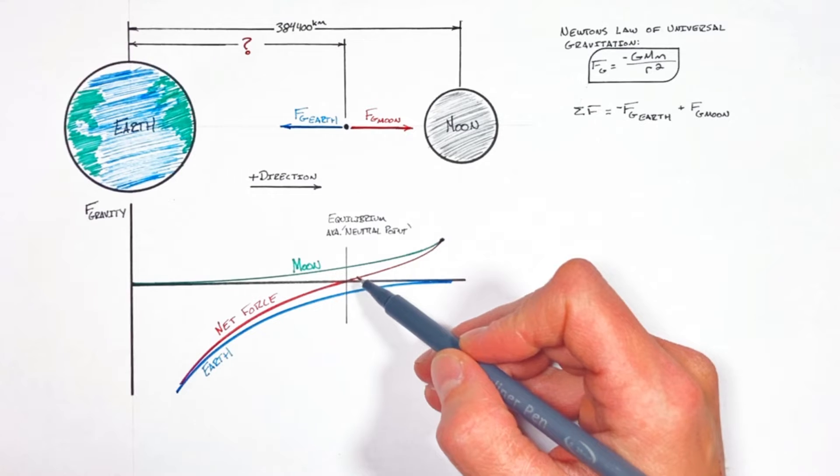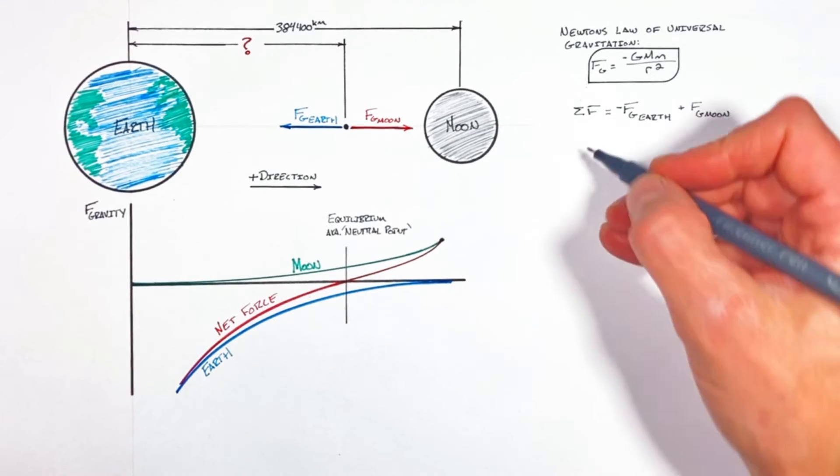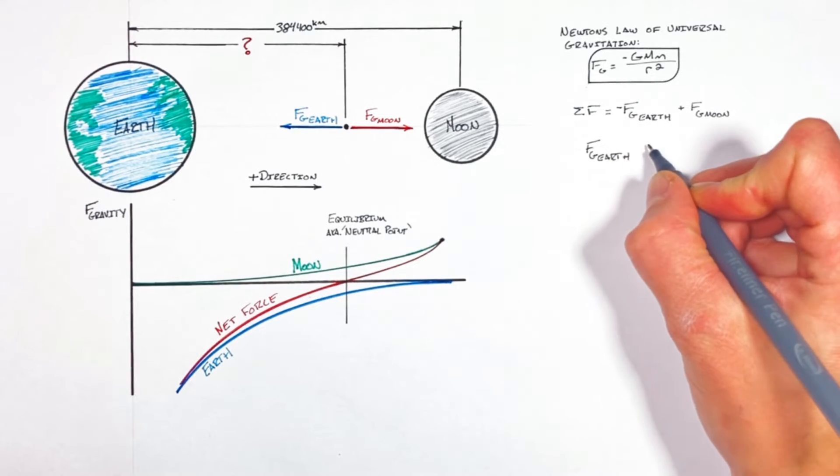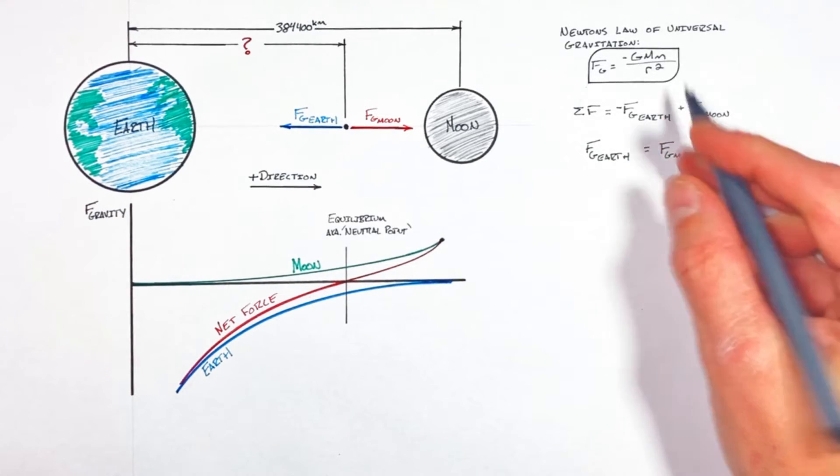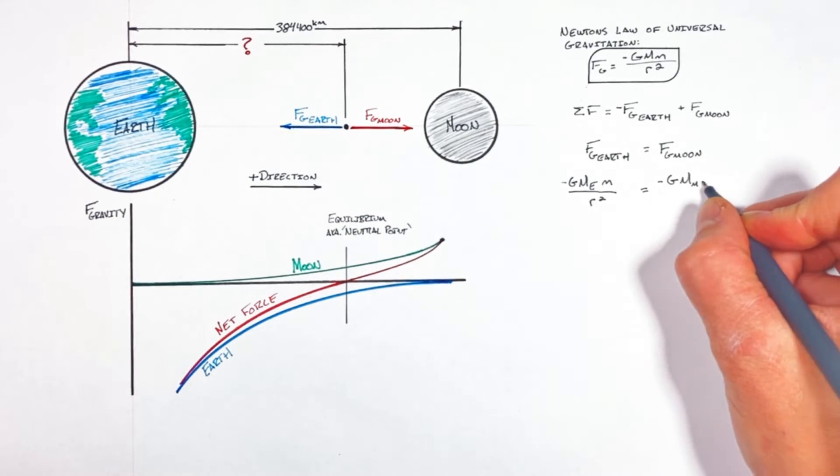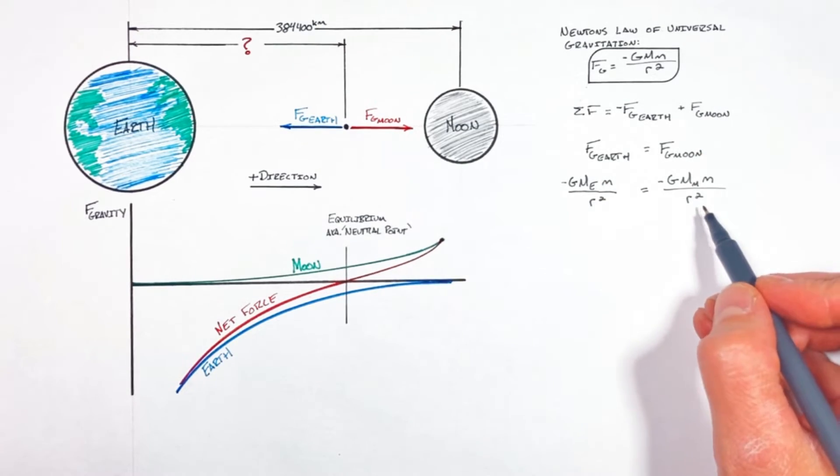And that net force is zero at the point of equilibrium. So going back up here to the math, we're simply going to set the force by gravity from the Earth equal to the force by gravity from the Moon. Now plugging Newton's law of universal gravitation in for both of these forces by gravity, we get this equality.